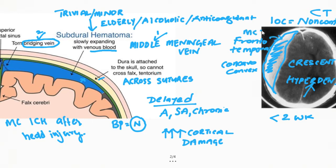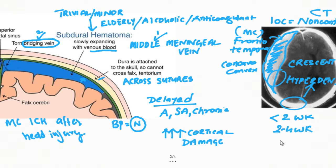The most common site for subdural hematoma is usually the frontal-temporal region. Other sites include around the occipital poles or the middle or inferior middle fossa. As you progress to subacute or chronic presentation, the density changes: it starts hyperdense, then becomes isodense, and finally hypodense — so it depends on which stage you are seeing the patient.